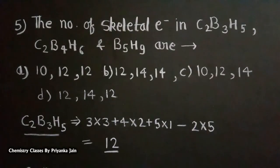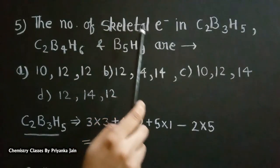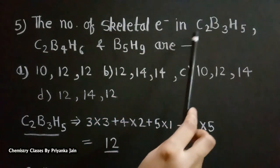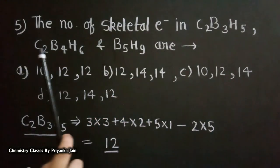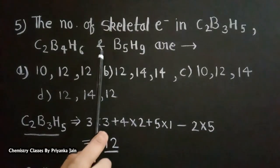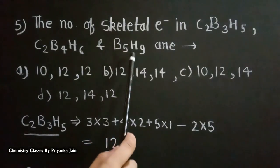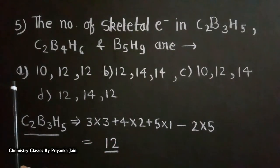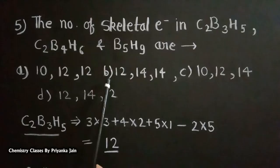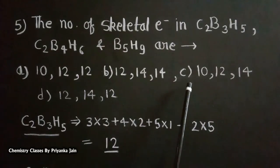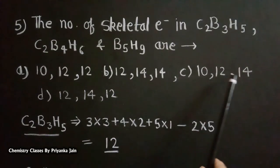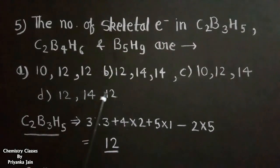The next CSIR NET question asks for the number of skeletal electrons (not pairs) in C2B3H5, C2B4H6, and B5H9. The options are: A) 10, 12, 12; B) 12, 14, 14; C) 10, 12, 14; D) 12, 14, 12. Note: we count skeletal electrons, so we do not divide by 2.